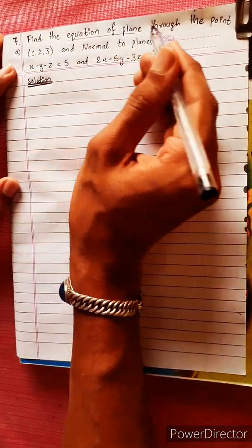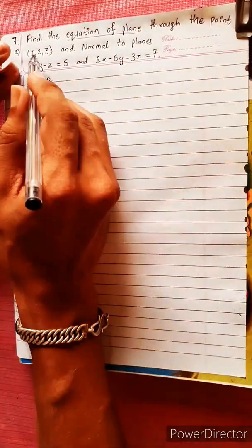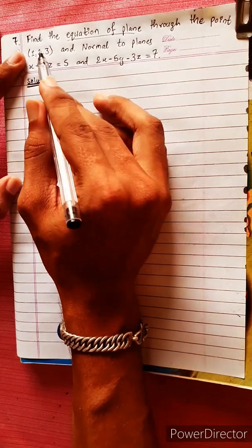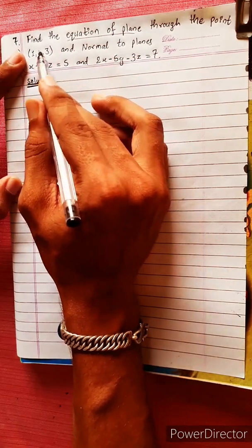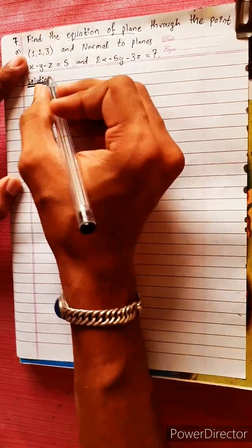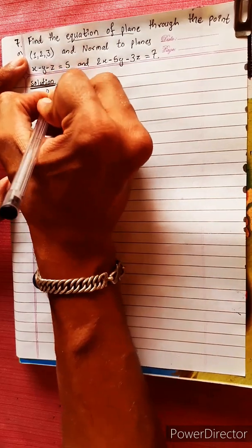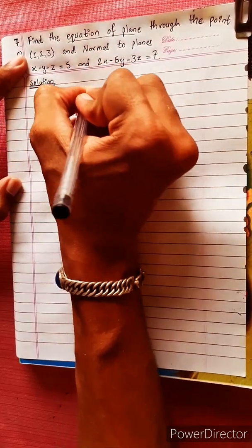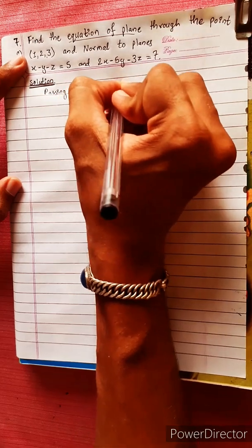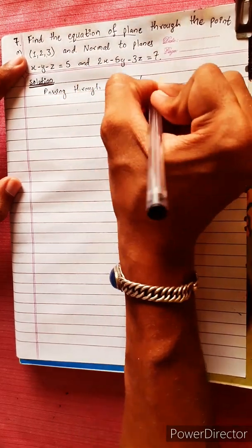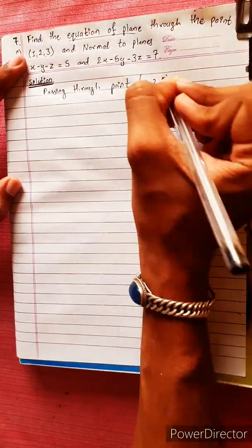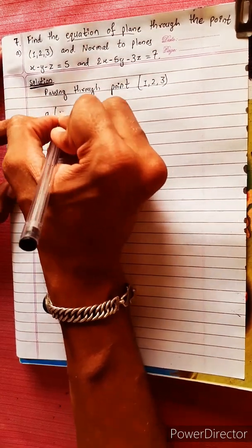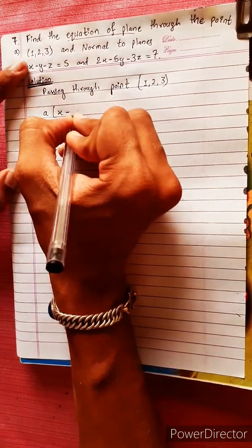Find the equation of the plane passing through the point (1, 2, 3) and normal to two given planes. The point that the plane passes through is (1, 2, 3).